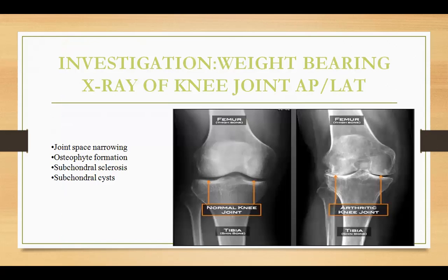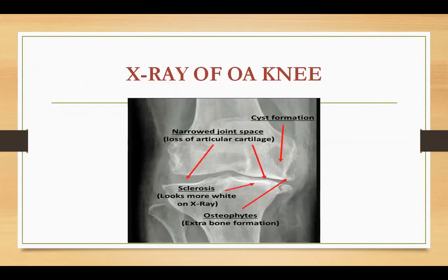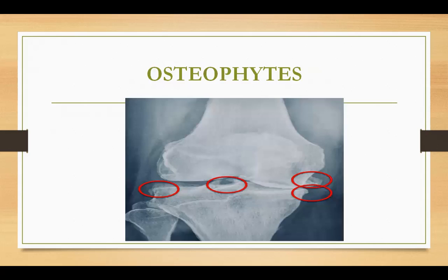The basic investigation for osteoarthritis is the X-ray of the knee joint. Comparing a normal knee joint X-ray with an arthritic knee joint X-ray, in the arthritic knee we can see joint space narrowing, osteophyte formation, subchondral sclerosis, and subchondral cysts. In the image you can see cyst formation, decreased joint space, sclerosis, and osteophytes — these are extra bony growths.